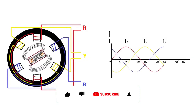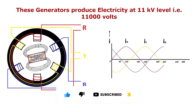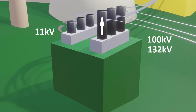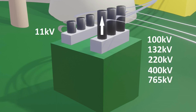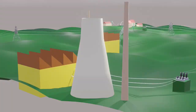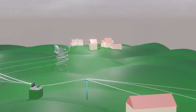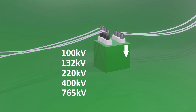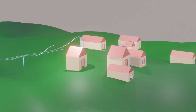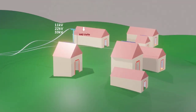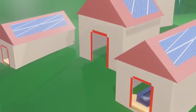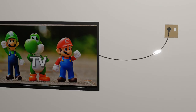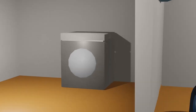In brief, electricity is generated at the 11 kV level, then it is stepped up to 100 kV, 132 kV, 220 kV, 400 kV, and 765 kV levels, and then transmitted over long distances. At the consumer end, electricity is again stepped down to 11 kV, 22 kV, and 33 kV levels. Further, it is stepped down to 3-phase 440 volts, which is 230 volts single phase, and electricity is used by consumers at these voltage levels.